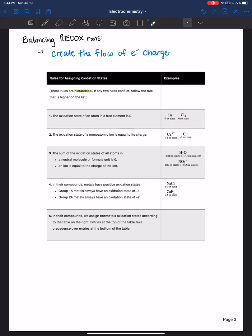The first rule is that the oxidation state of an atom in a free element is zero. For example, chlorine is one of the diatomic molecules on the periodic table. It's in its natural form so it's assigned a zero oxidation state. So is copper metal.